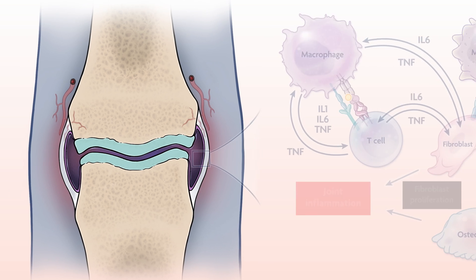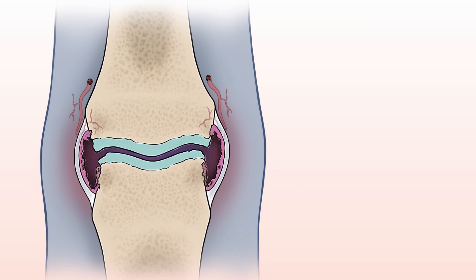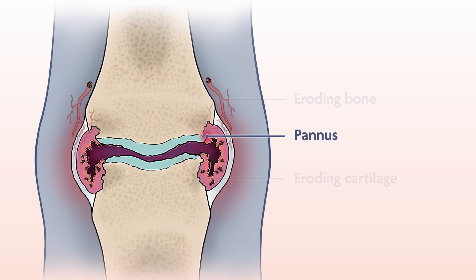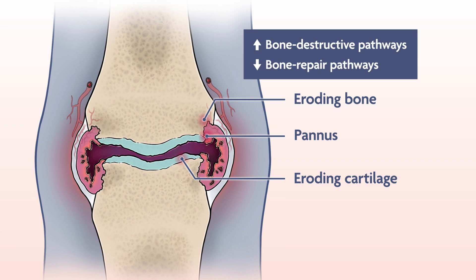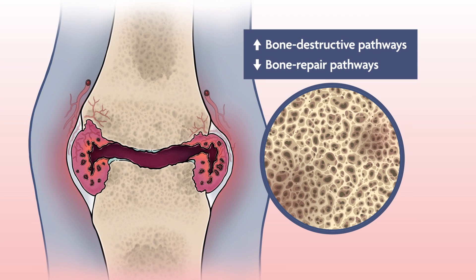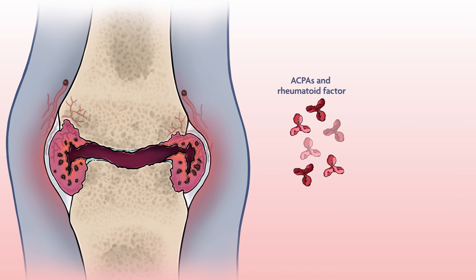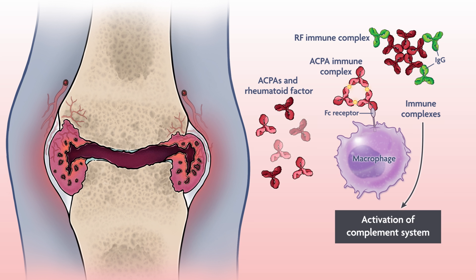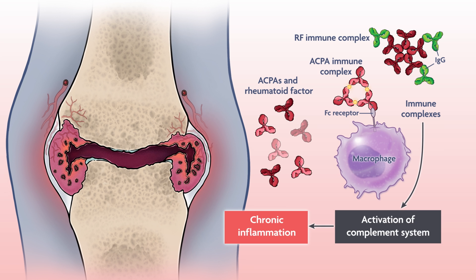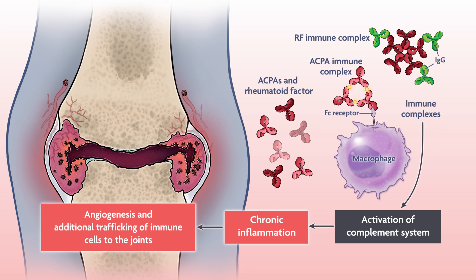As the disease progresses, abnormally proliferating synovial cells can cause a tumor-like growth called pannus to develop, eroding cartilage and bone. Other bone-destructive pathways also become activated, made worse by the inhibition of bone repair pathways. As a result, patients develop articular bone loss and systemic osteoporosis. Meanwhile, ACPAs and rheumatoid factor form immune complexes that activate the complement system, promoting chronic inflammation. Chronic inflammation is accompanied by angiogenesis, which allows additional trafficking of immune cells to the joints and produces additional pro-inflammatory factors, exacerbating existing processes.